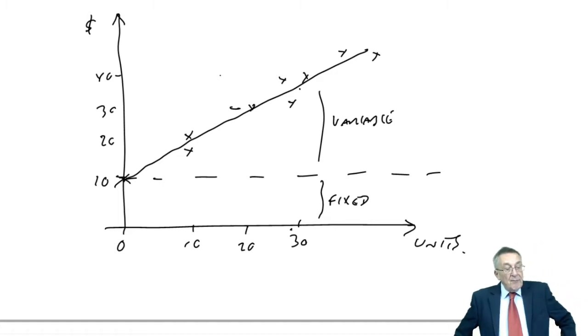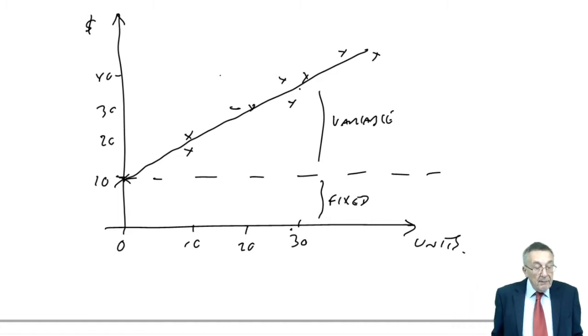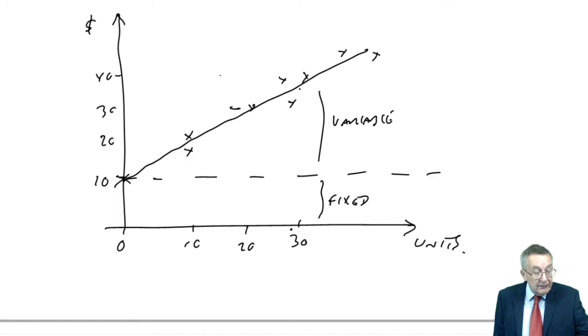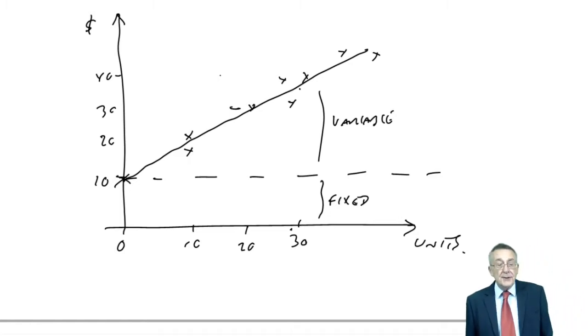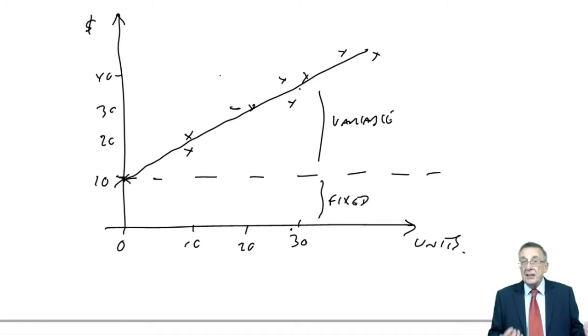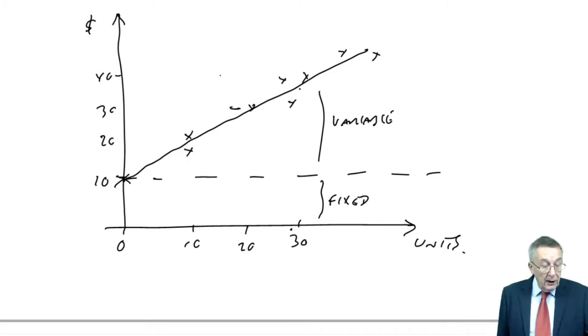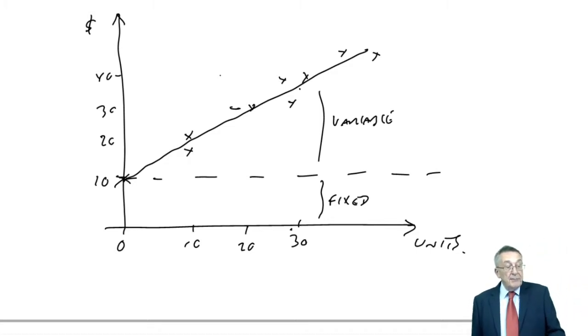We've got there a table which shows the total costs recorded at different activity levels during the year. So maybe we've looked at the past seven months. And one month we've produced 100 units, the next month 400, the next month 200, the next month 700, and so on. So month by month we're producing more, we're producing less. And we've also got for each month the total cost. Maybe it's the electricity bill, the total cost. Month one, we've produced 100 units and spent 40,000. Month two, 400 units, we've spent 65,000, and so on.